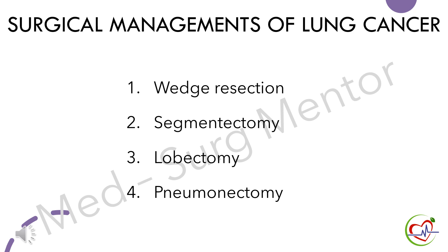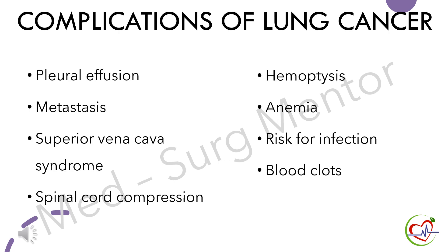Surgical management of lung cancer includes four main procedures: wedge resection, segmentectomy, lobectomy, and pneumonectomy. Wedge resection is the removal of a small wedge-shaped part of the lung tissue surrounding the cancerous tumor. Segmentectomy involves removal of one to four segments of certain lobes to save uninvolved tissue. Lobectomy removes the lobe of the lung affected by cancer. Pneumonectomy involves removal of the entire lung affected by cancer.